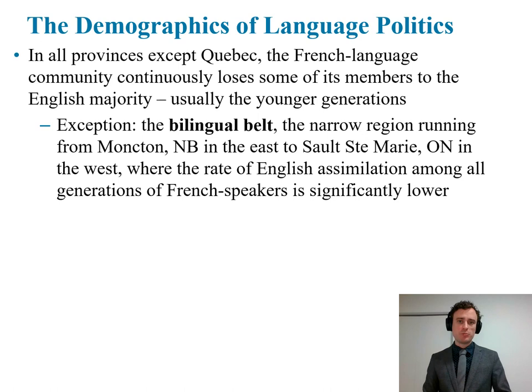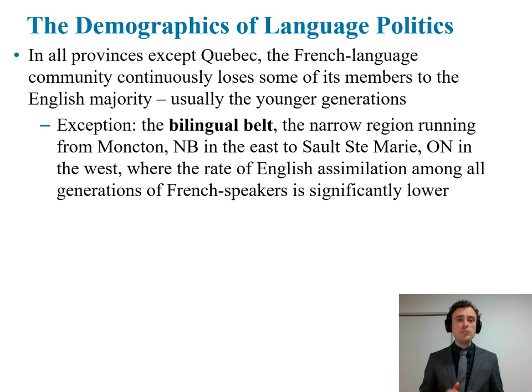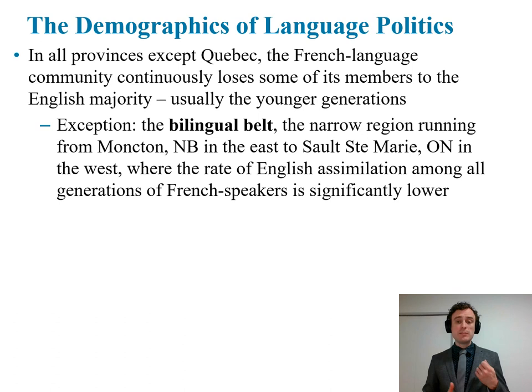In all provinces except Quebec, the French language community continuously loses some members to the English majority — usually younger generations — through a process of English assimilation. There is an exception known as the Bilingual Belt: a narrow region running from Moncton, New Brunswick in the east to Sault Ste. Marie, Ontario in the west. Across this concentrated area, where most francophone speakers outside Quebec live, rates of English assimilation among all generations of French speakers are significantly lower. In the Bilingual Belt, people retain their French language skills.